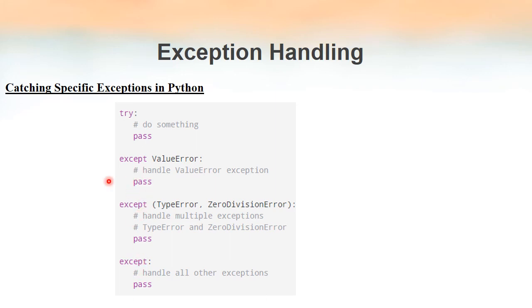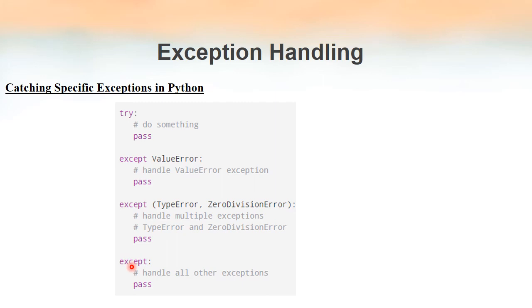We can write multiple except clauses for a single try clause to handle specific exceptions rather than writing only general except clauses. If none of the specific except clauses match, the general except clause will execute. Remember: even with multiple except clauses, only one executes at a time, because only one exception is raised at a time inside the try clause.